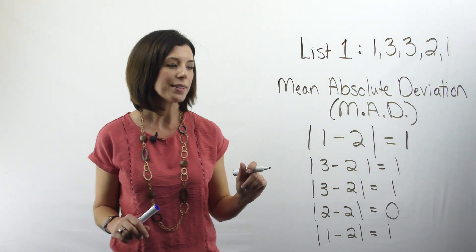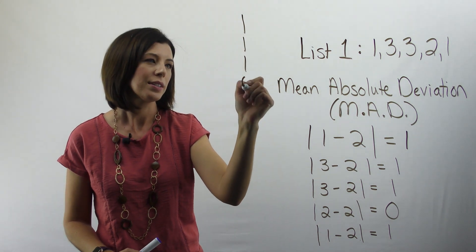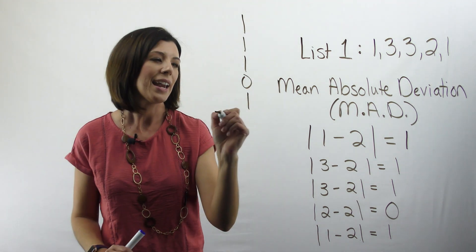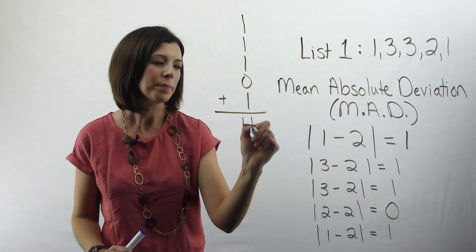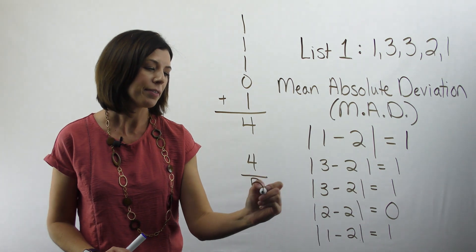Next, I want to add all these numbers up. So I'm going to write 1, 1, 1, 0, and 1. And I add these up to get 4. Then I'm going to divide by my number of data points. So 4 divided by 5.